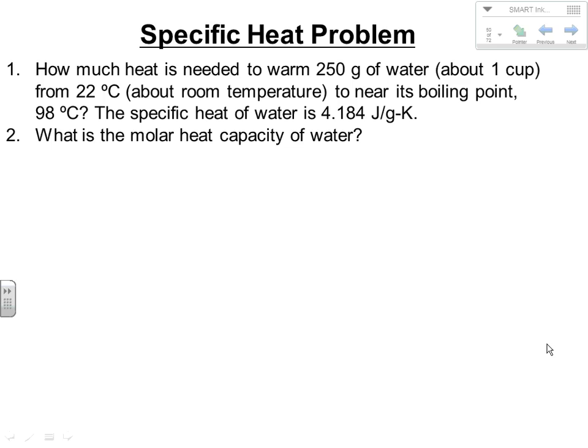A specific heat problem: how much heat is needed to warm 250 grams of water (around one cup) from 22 degrees Celsius, which is around room temperature, to 98 degrees Celsius, near its boiling point. The specific heat of water is 4.184 joules per gram Kelvin or degree Celsius — you'll see this value a lot. Most of the time when we're doing calorimetry, we're looking at reactions taking place in water, so we measure the energy of the system by measuring what's happening to the water.